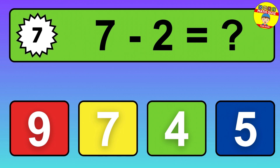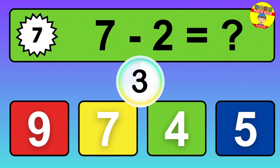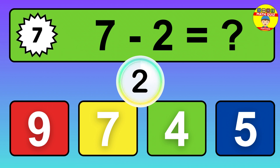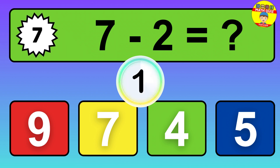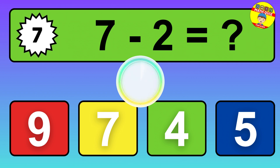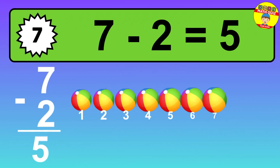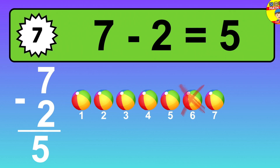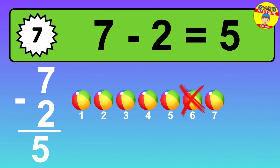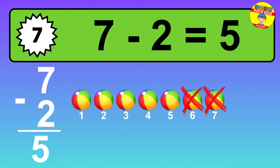Question 7. 7 minus 2 equals what? So the answer is 7 minus 2 is 5. Let's count it. 1, 2, 3, 4, 5.